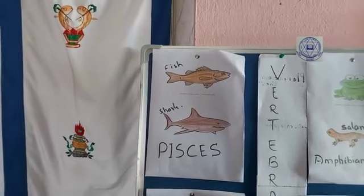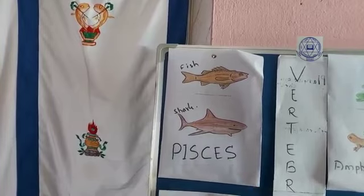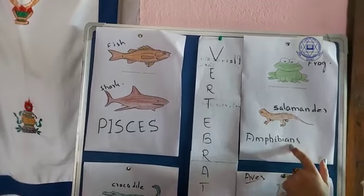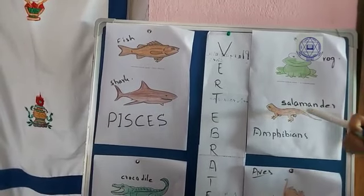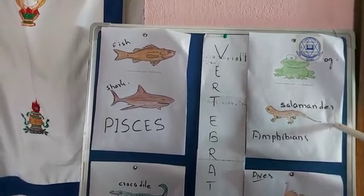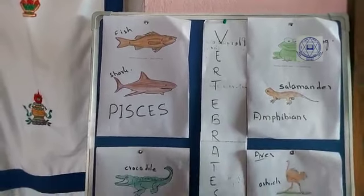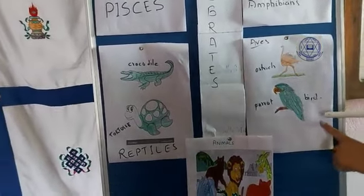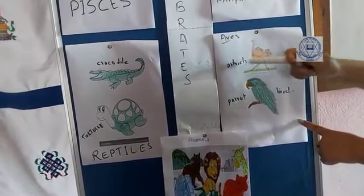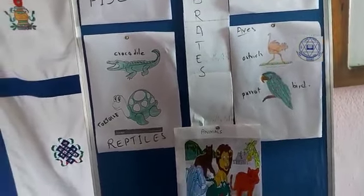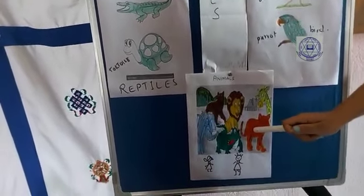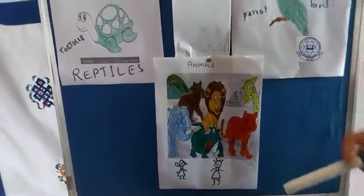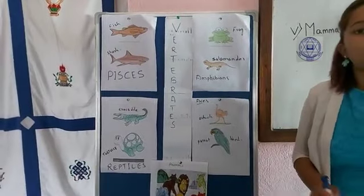Let me go through all classes one more time. Class Pisces includes fish and shark — they breathe through gills. Amphibians include frog and salamander — they lay eggs and are oviparous. Reptiles include crocodile and tortoise — they crawl on the ground. Aves include ostrich and parrot — they have wings and hollow bones. Mammals have mammary glands and give birth to babies.